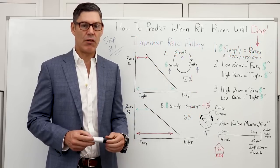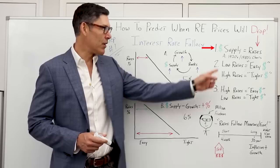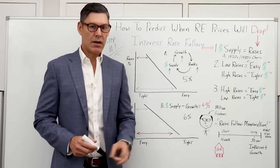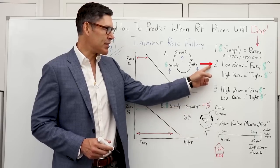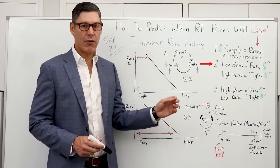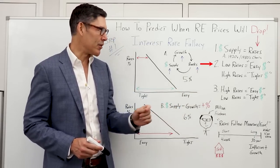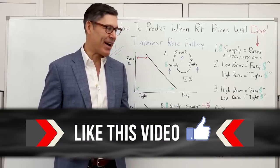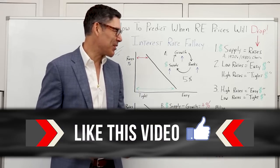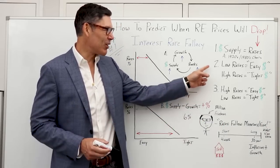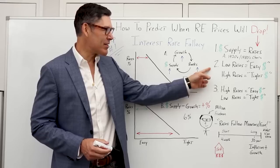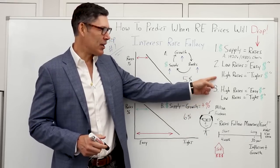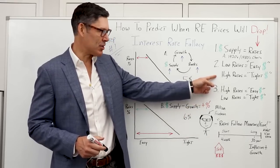Pretty much the opposite of what you'd expect if that theory were true. The second idea we're going to debunk is another one you hear from Austrian economists all the time. They always say that lower rates equals easy money, and higher rates equals tight money conditions.